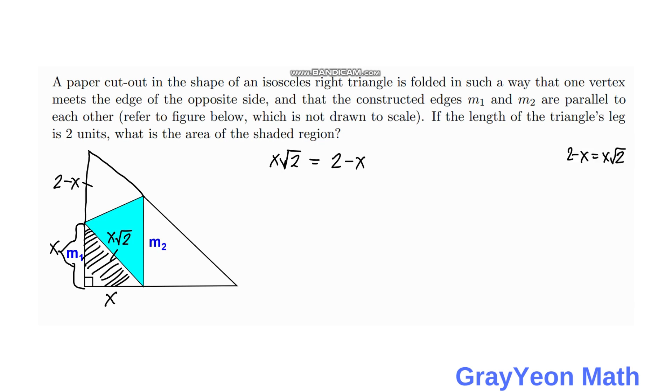Next we need to solve for x on this equation, then we just simply square both sides. Then we have 2x² is equal to 4 minus 4x plus x².